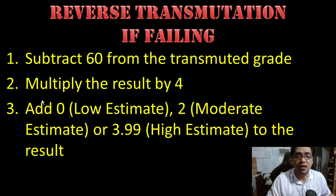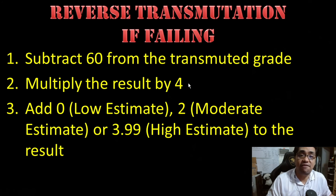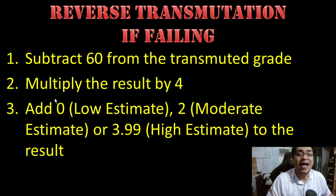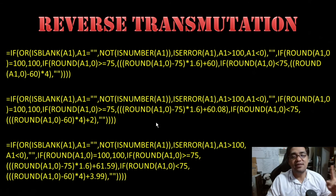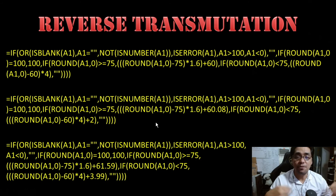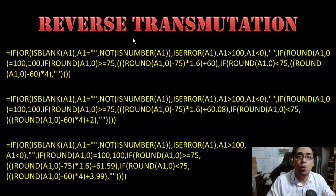If the transmitted grade is a failing grade and you need to perform reverse transmutation, the formula is: subtract 60 from the transmitted grade, then multiply the result by 4. The next step depends on what estimate you wish to use. For the low estimate, add 0 — meaning don't add anything. For the moderate estimate, add 2. And for the high estimate, add 3.99. These are our reverse transmutation formulas, and they can be found in the descriptions below of this YouTube video — for the low estimate, the moderate estimate, and the high estimate.